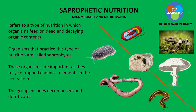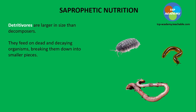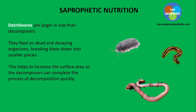For fungi and bacteria, they are responsible for the decomposition and they are referred to as decomposers. There we have a line showing the divide. Vegetivores are larger in size when compared to decomposers. They feed on dead and decaying organisms, breaking them down into smaller pieces. This helps to increase the surface area so a decomposer can complete the process of decomposition quickly.